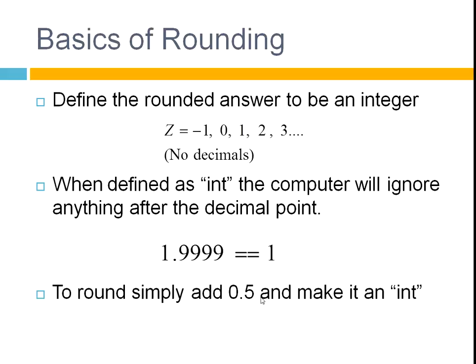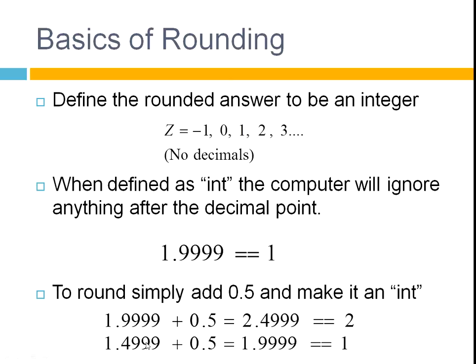And when you round, you just add a half — add 0.5 — and make that an integer. If you've got this number we used in that example, and you add a half to it, you get 2 point something, and this something that comes after is just completely ignored. Whereas if you've got something that's very close to 1.5 but not quite there, and you add a half to it, it won't get up to 2. So all of this will be ignored and you'll be left with 1. And this is exactly what you'd expect from rounding these numbers.